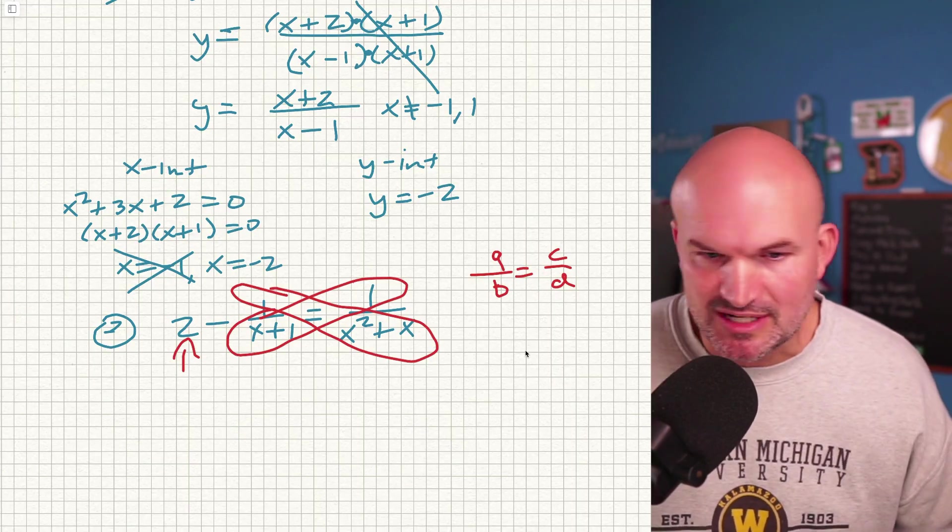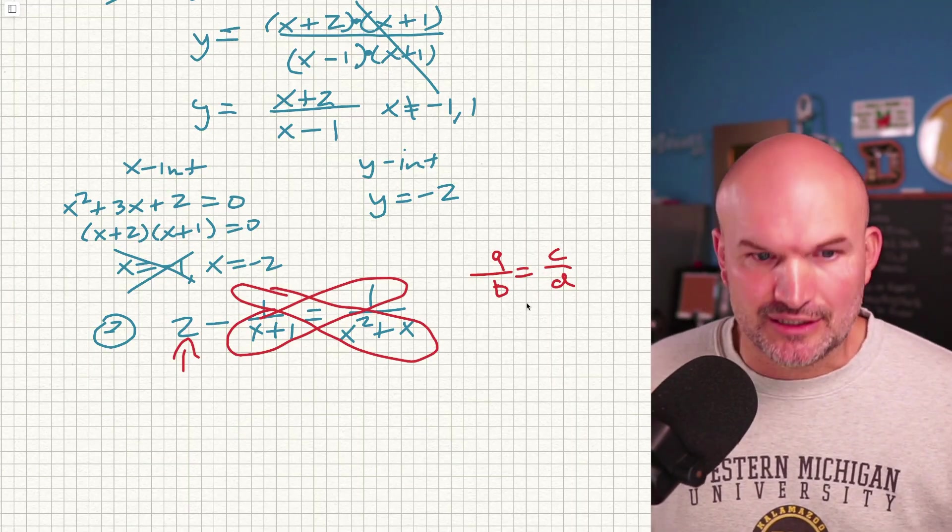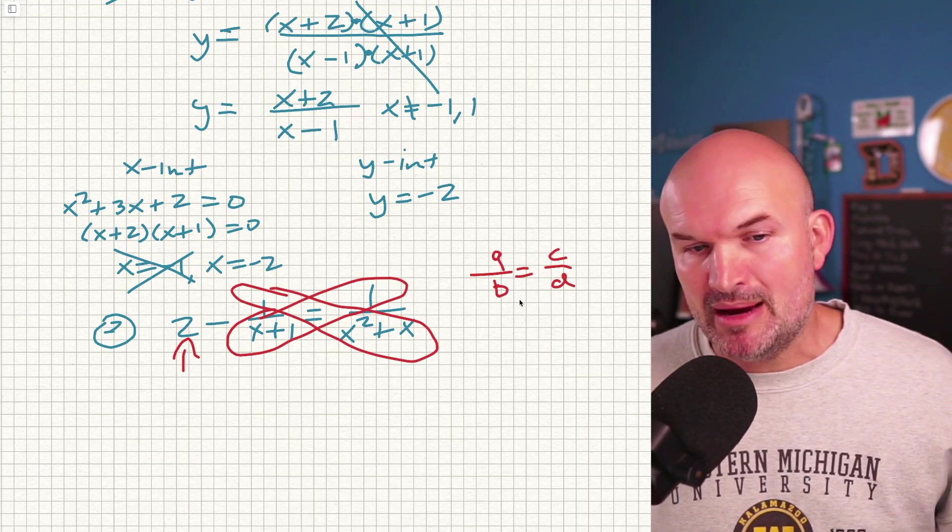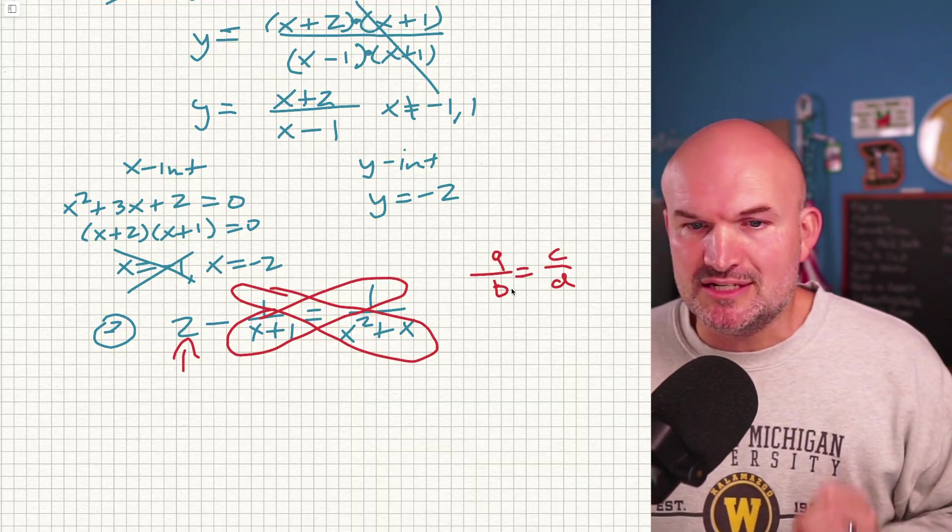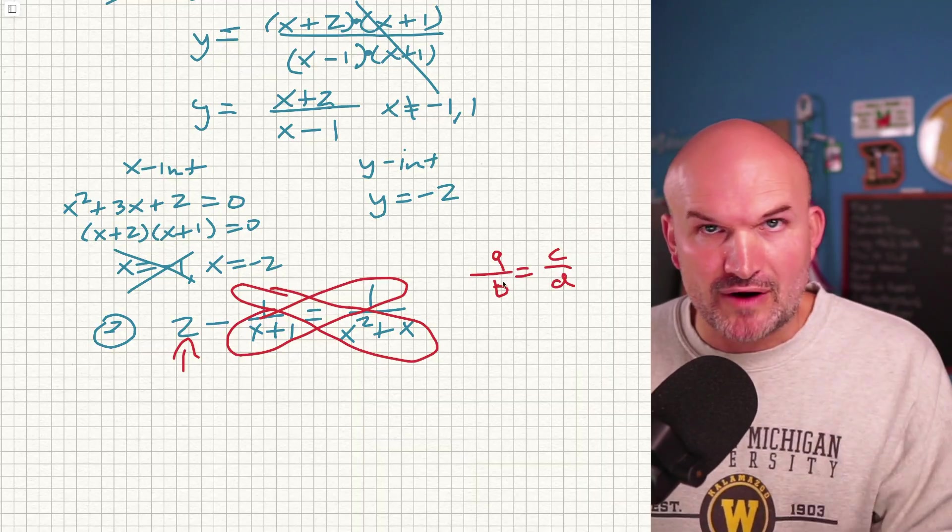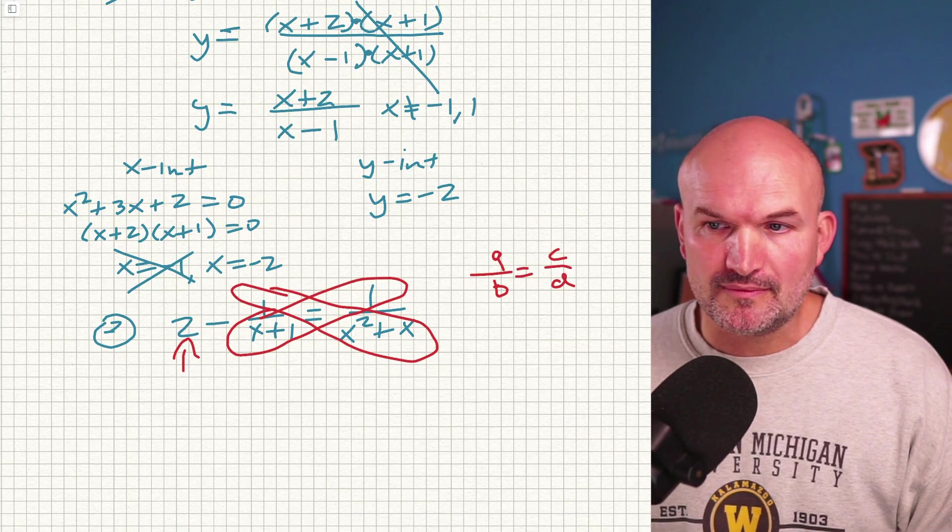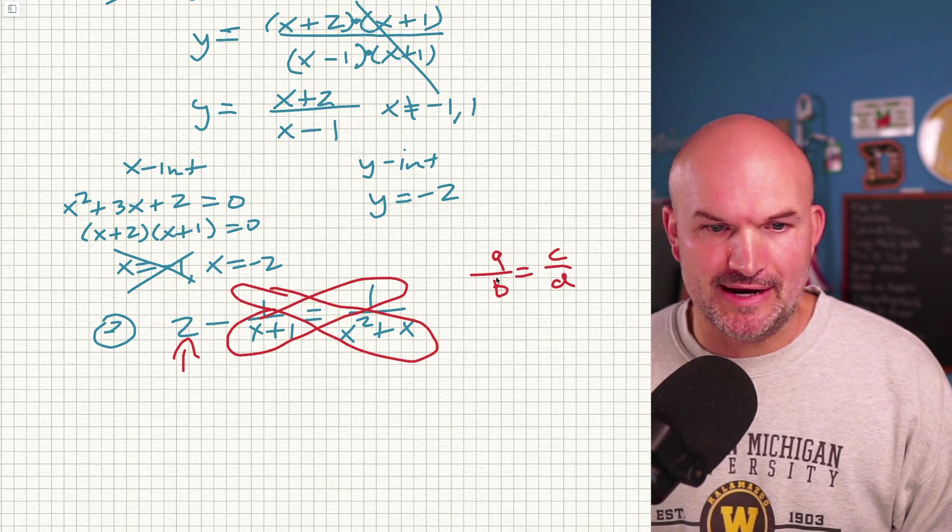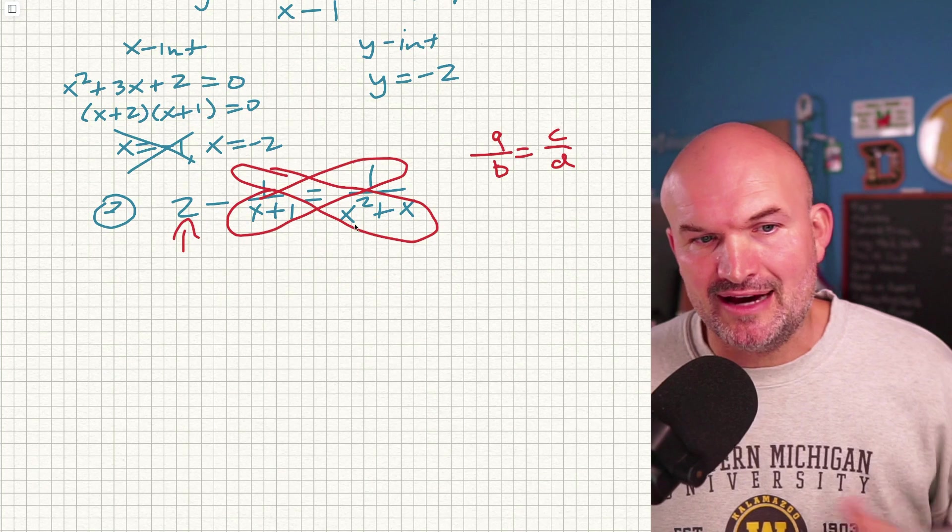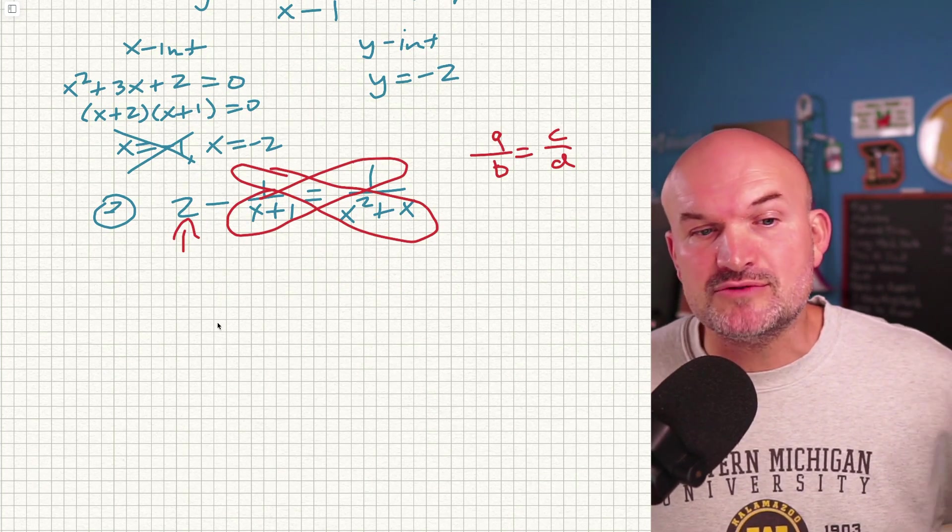So yeah, I don't have anything wrong with the cross product. It makes our life a lot easier. It's helpful. It's easy to remember, but you can only apply the cross product when you have a proportion, a fraction equal to a fraction. This is not a proportion. So don't make that mistake.